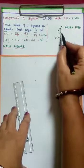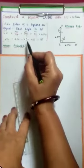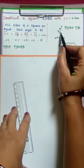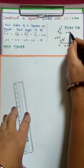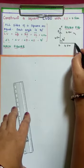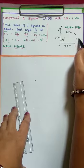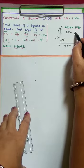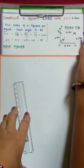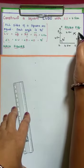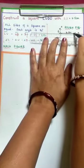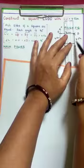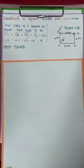Again, taking O as center, same length 4.5 cm radius, draw an arc. With U as center, same radius 4.5 cm, cut this arc. These two arcs intersect at D. Join OD and DU. So the LUDO square is constructed.